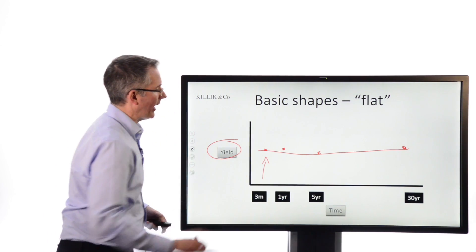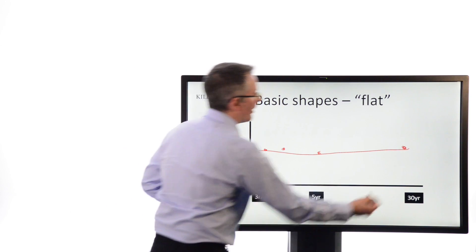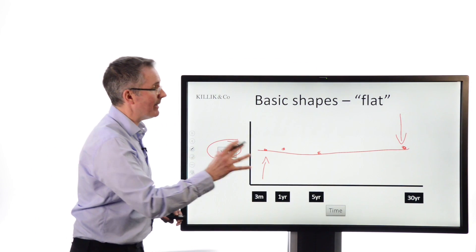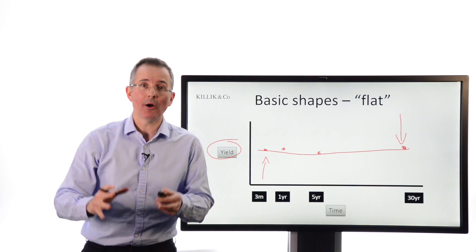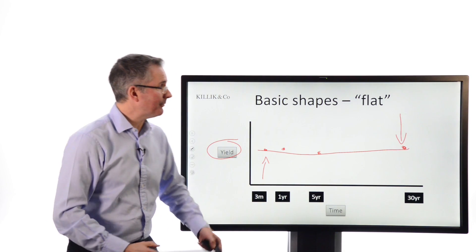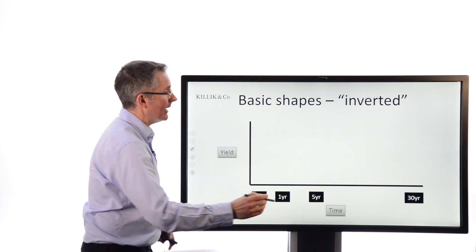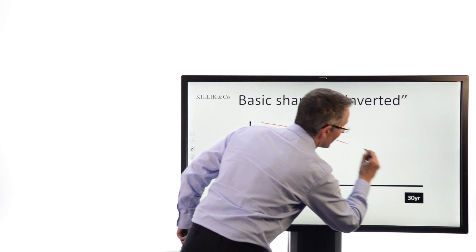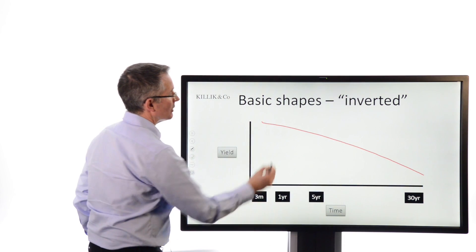you've seen at the short end, as they call it, yields starting to rise, and at the long end, yields starting to fall. That can be an early warning indicator that the market's about to invert. And as the name suggests there, that simply may not be a straight line, but that's simply where, when you join up the dots, if you like, across different maturities, you get that shape.